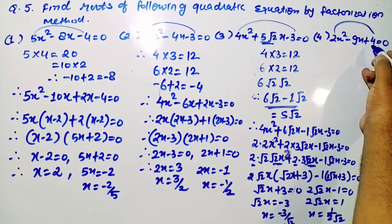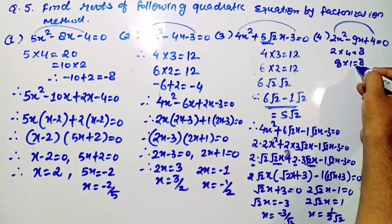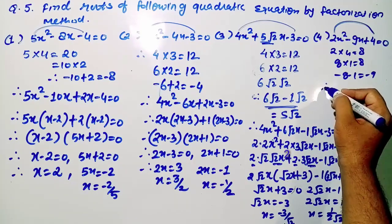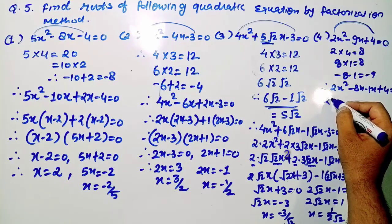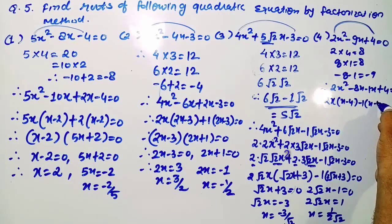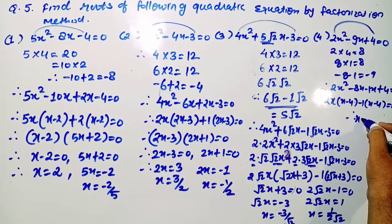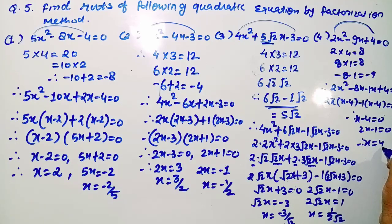Fourth question: 2x² − 9x + 4 = 0. Multiply a and c: 2 × 4 = 8. Split −9x using −8x and −x (product = 8, sum = −9): 2x² − 8x − x + 4 = 0. Taking common factors: 2x(x − 4) − 1(x − 4) = 0, so (x − 4)(2x − 1) = 0. Therefore x = 4 or x = 1/2.